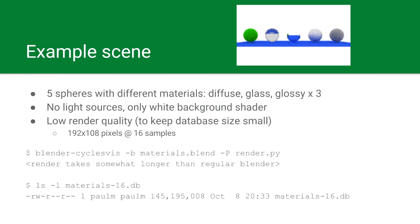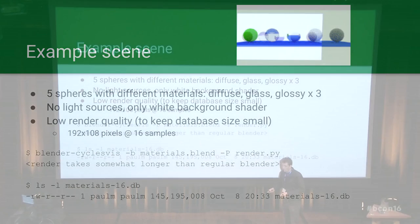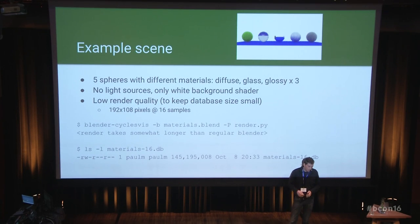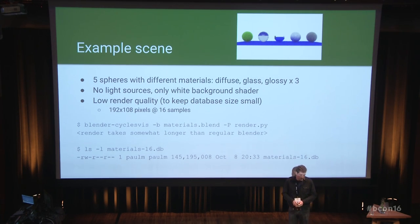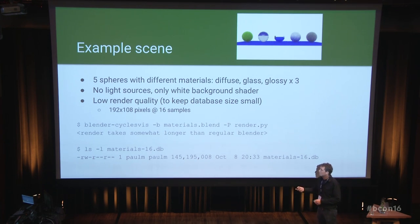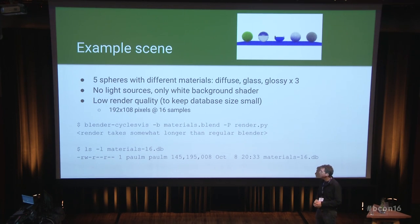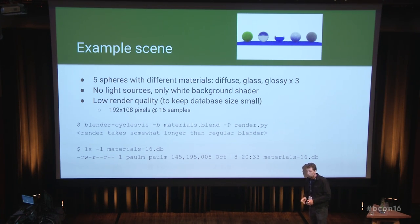To show some examples, here's a very simple scene: five spheres with different materials — diffuse, glass, and three glossy with varying roughness. No light sources, just a white background, and a very low render quality to keep the database size down. Using the hacked version of Blender, the render takes a bit more time because all the data is being saved. The result is a single file of about 145 megabytes containing all information about the rays and paths.